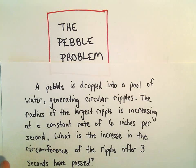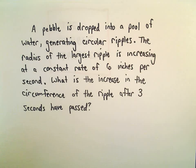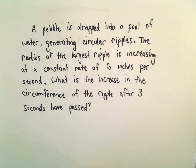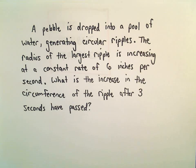Alright, in this video we're going to look at a little related rates problem. Suppose a pebble is dropped into a pool of water and that makes little circular ripples. The radius of the largest ripple is increasing at a constant rate of 6 inches per second. We want to know what's the increase in the circumference of the ripple after 3 seconds have passed.